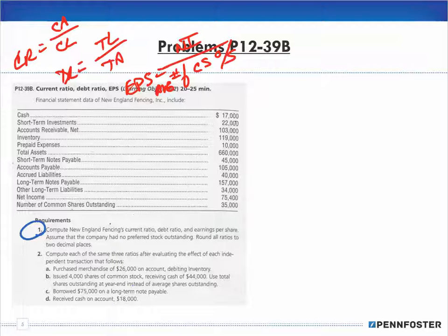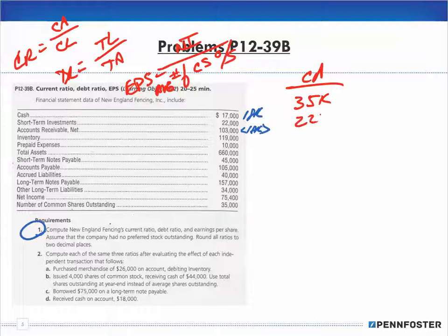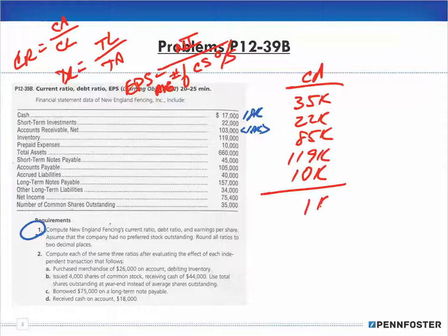Transaction D: receive cash on account of 18,000. Cash increases by 18,000 and accounts receivable decreases by 18,000. The net effect on total assets stays the same — there is no change in total assets. For the current ratio: current assets are (17,000 + 18,000) = 35,000 cash, plus 22,000, plus (103,000 - 18,000) = 85,000 accounts receivable, plus 119,000, plus 10,000 = 271,000.